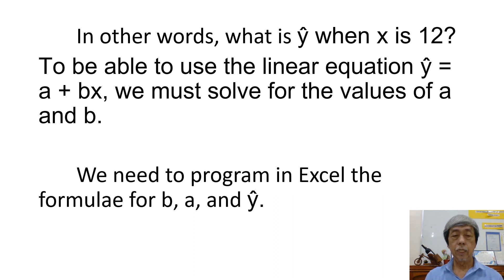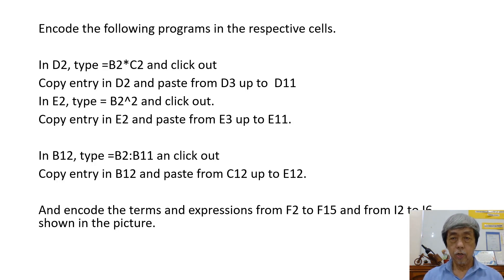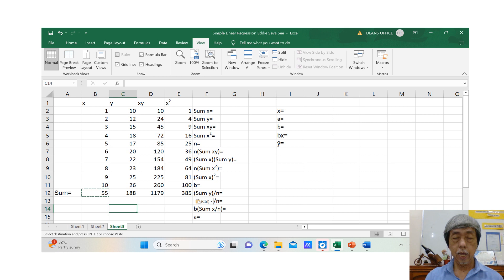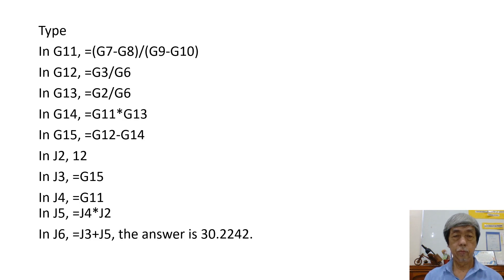We need to program in Excel the formulae for B, A, and Y-carat. This is the Excel sheet that shows the programming. Encode the following programs in the respective cells. The instructions are given in this page, and the Excel sheet is also shown where the programs are inputted. In continuation, this page also shows the other programs. Another page for the continuation of the programs.